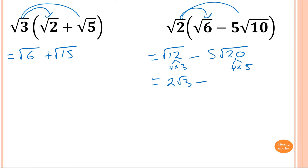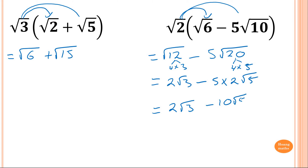And then minus 5 times square root of 4 times square root of 5. So that gives 2 root 3 minus 10 square root of 5. That's the answer. I'll just rewrite the 5 properly.